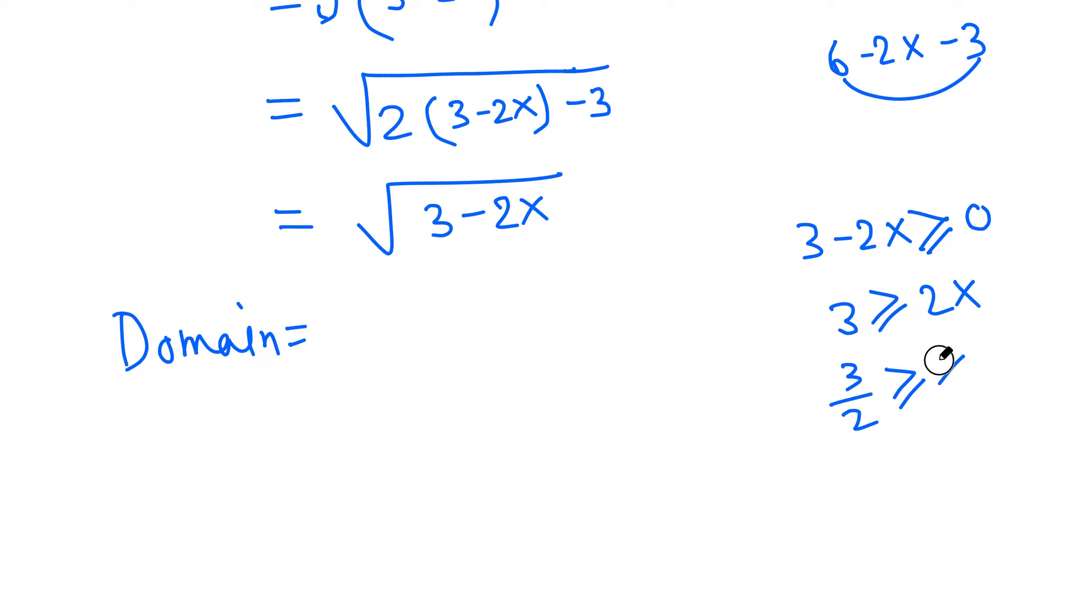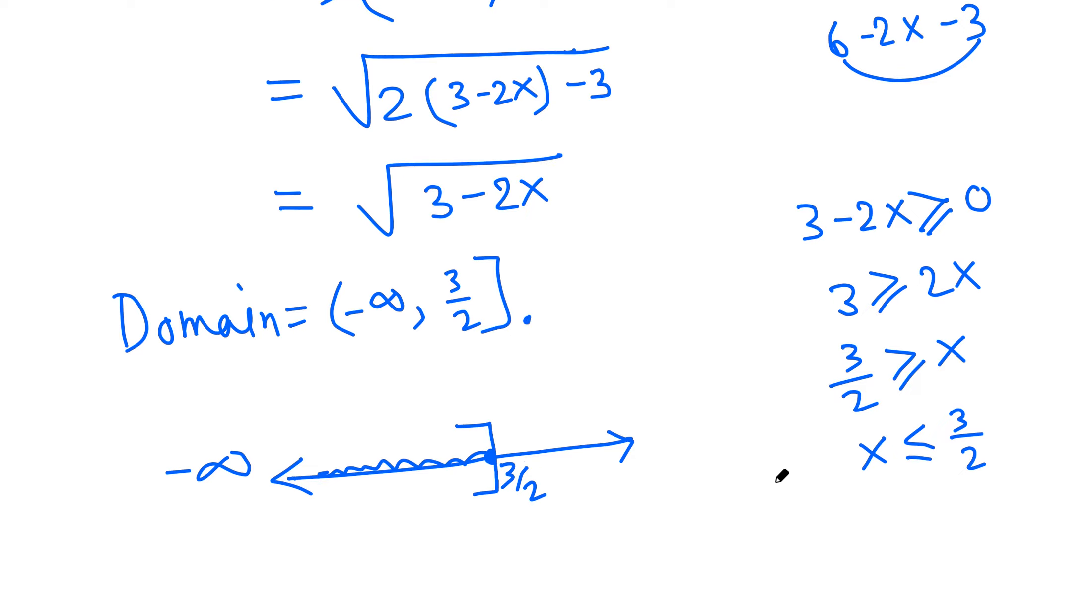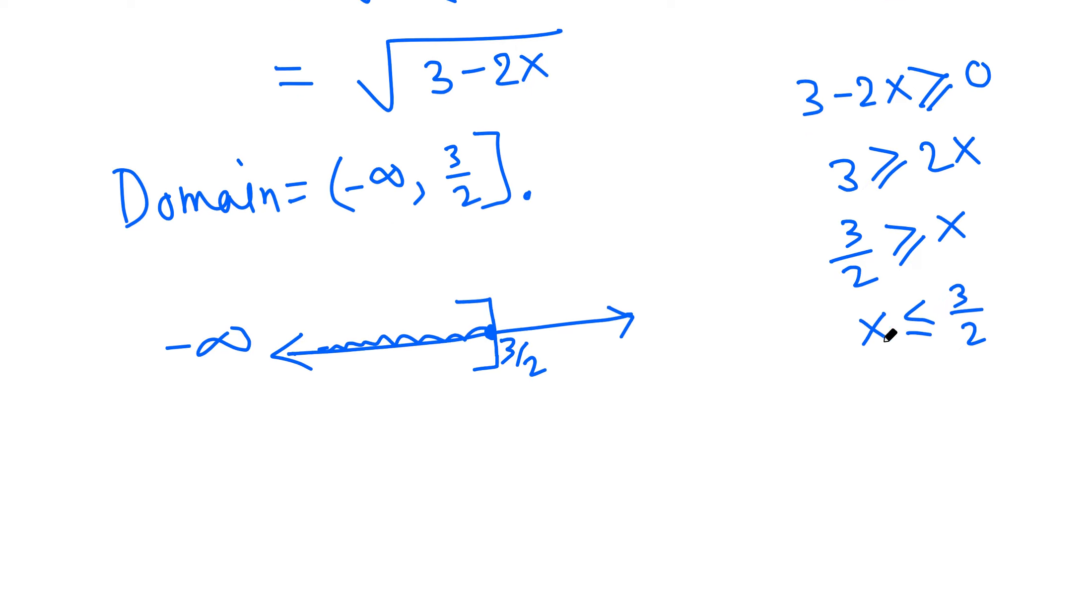On the number line, 3/2 is somewhere here, inclusive with a bracket, and smaller values. The domain is negative infinity through 3/2, or in set builder notation, the set of all real numbers x such that x is less than or equal to 3/2. These two things are the same, but generally they ask you to determine the domain in interval notation.